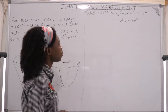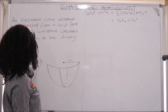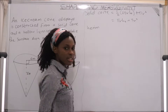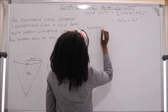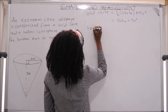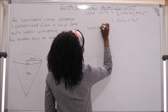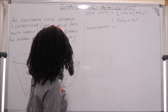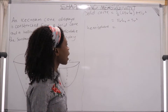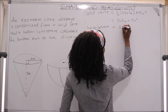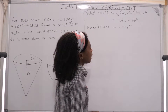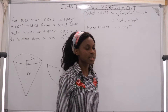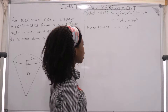This is the equation of a solid cone. Now for a hollow hemisphere: a hemisphere is half the surface area of a sphere. The surface area of a sphere is 4πr², so the surface area of a hollow hemisphere is 2πr². If the hemisphere is closed, we add another πr² for the closing circle, giving 3πr².